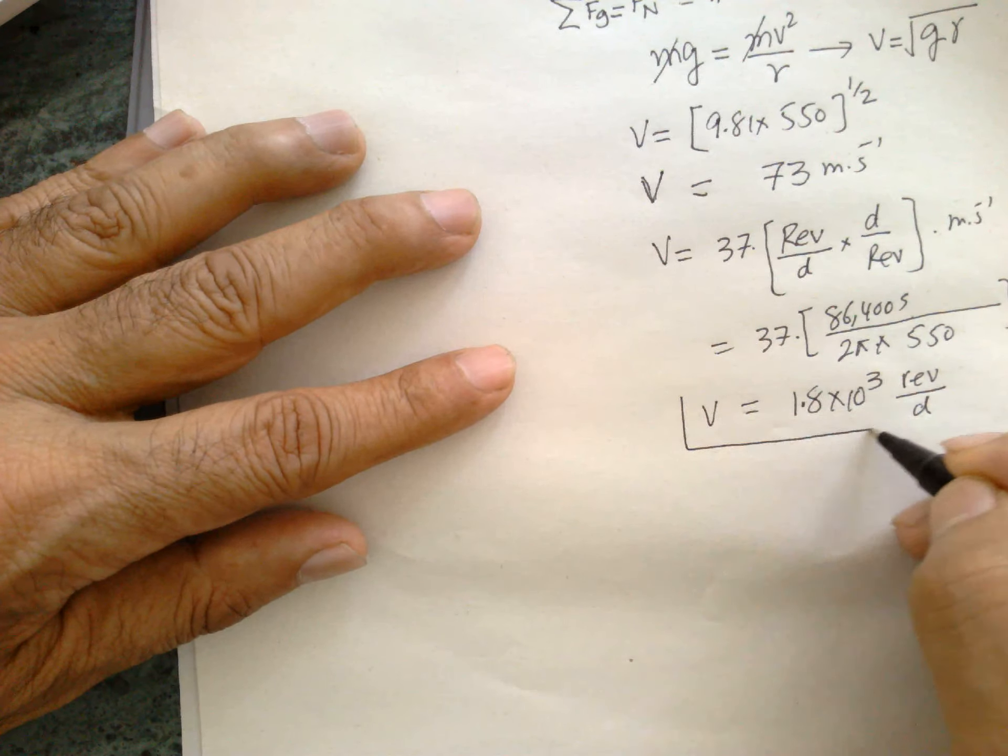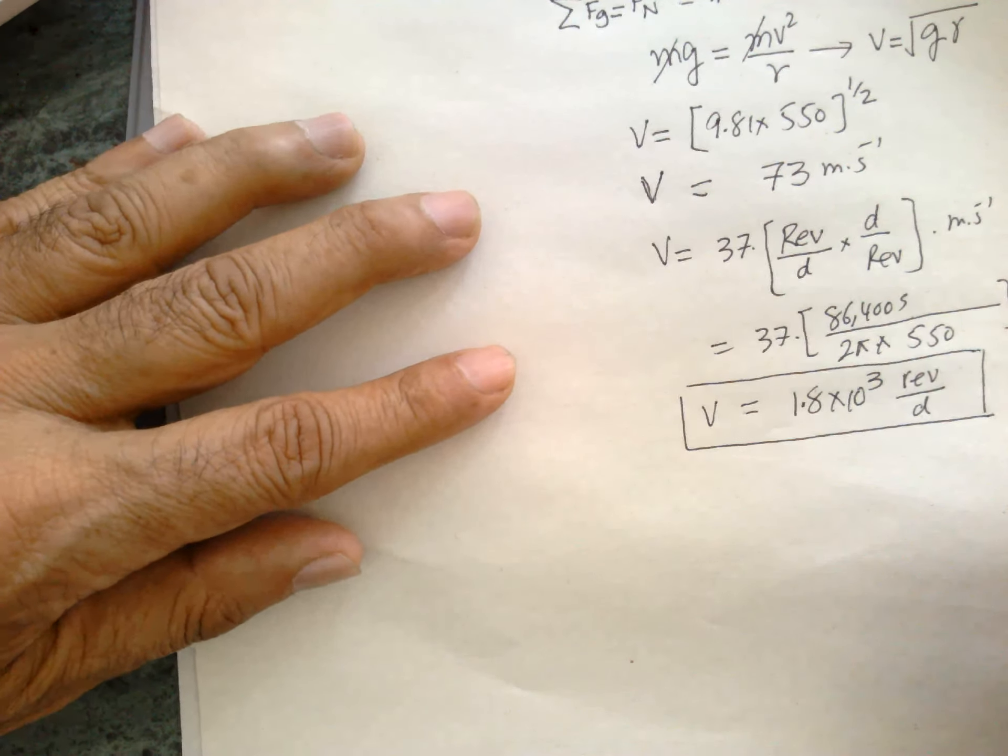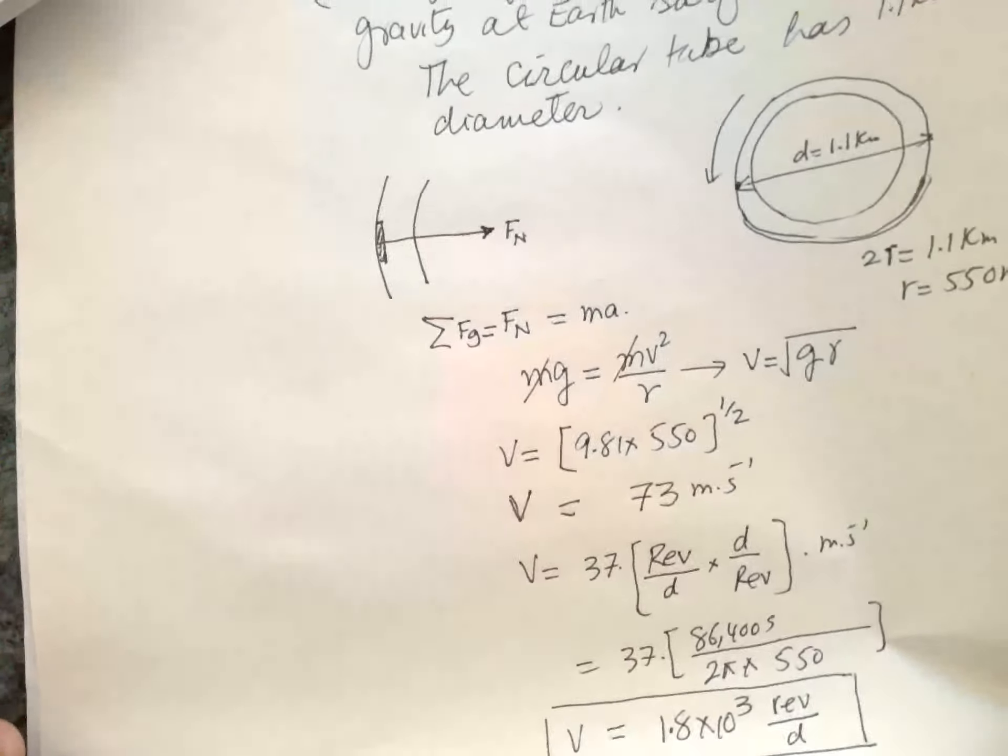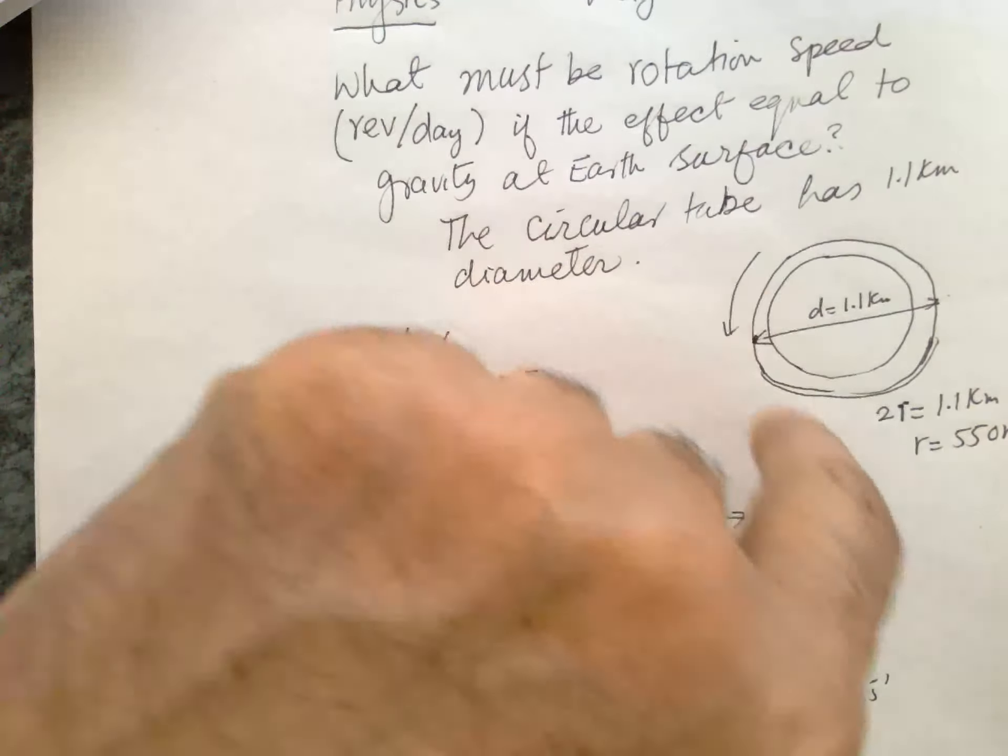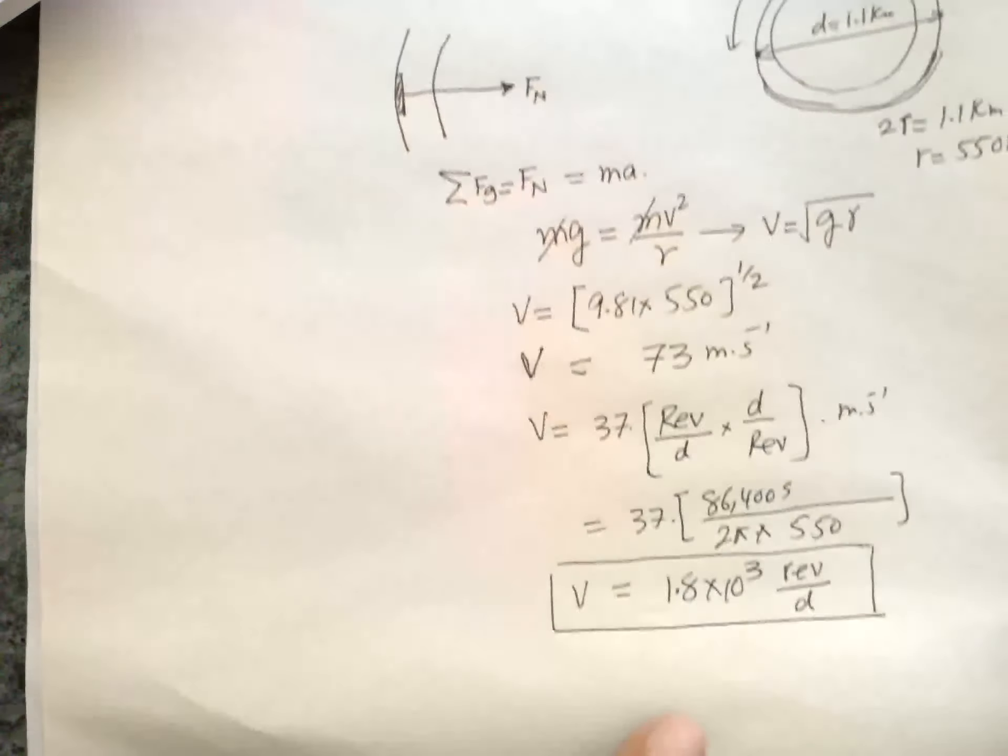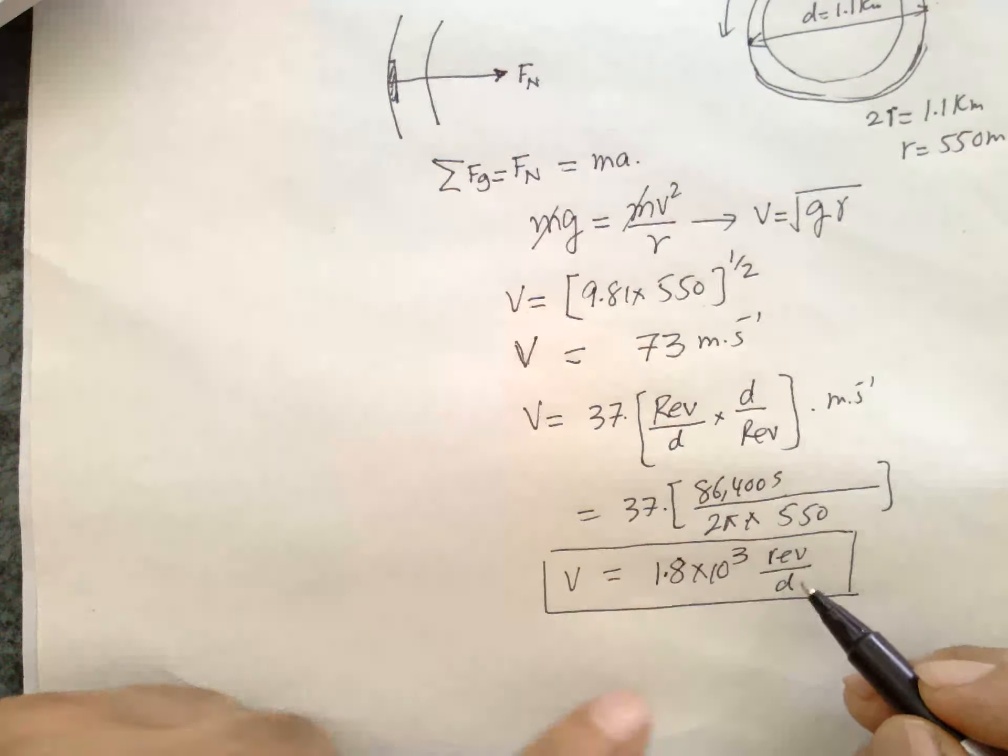That will be the speed of this arm. So in this way we can experience weightlessness if this object is revolving at this speed, which is 1.8 × 10³ revolutions per day.